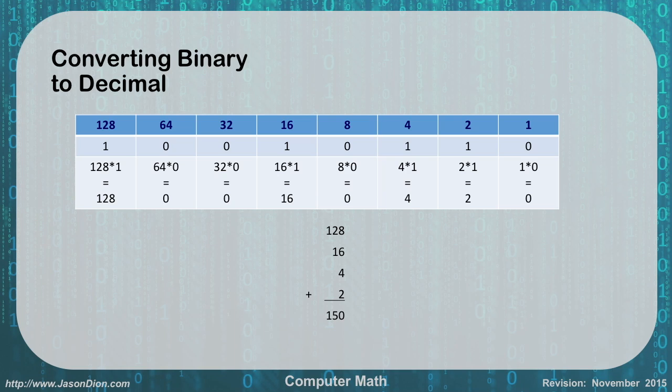So if I give you the binary number of 10010110, that means it's 150 in human base 10 language.